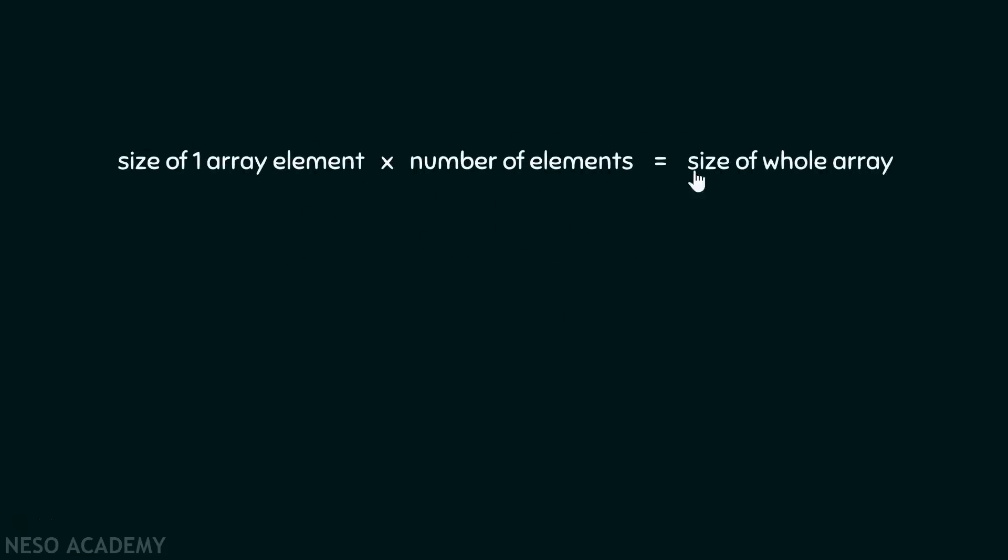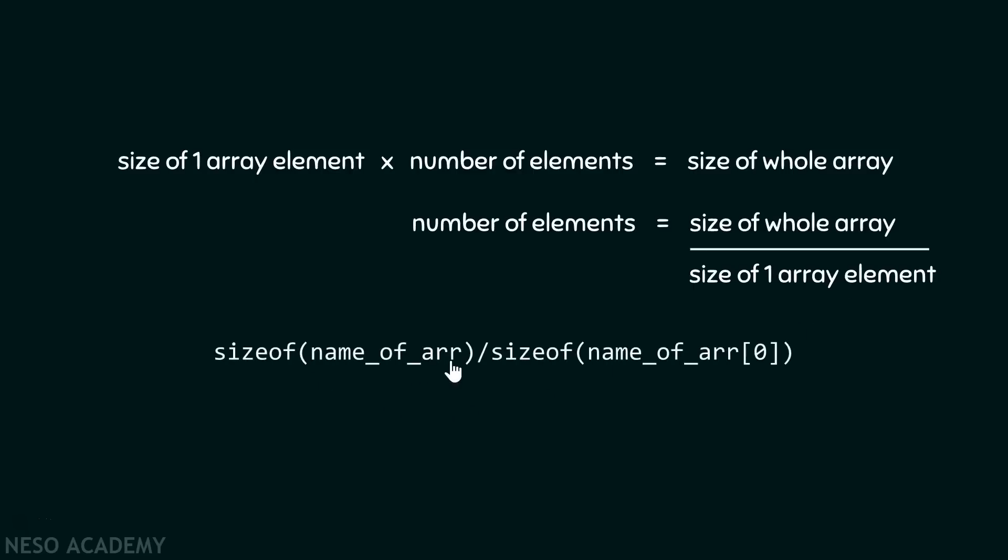In order to calculate size of whole array, we need to multiply size of one array element with number of elements. Isn't that so? If we want to calculate number of elements, we need to divide size of whole array by size of one array element. And that is what we are doing here. Right? sizeof(name_of_arr) means size of whole array, and sizeof(name_of_arr[0]) means size of one array element. And you are dividing both of them in order to calculate the number of elements.